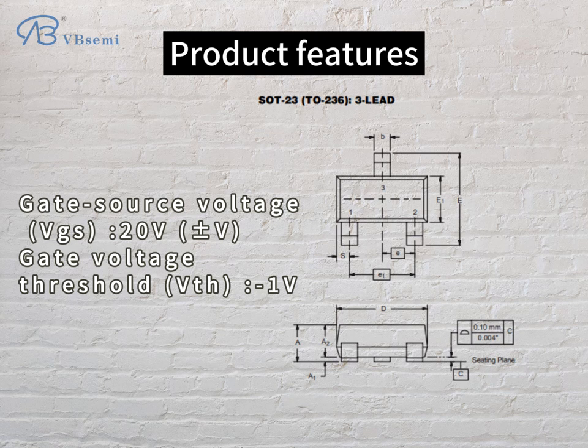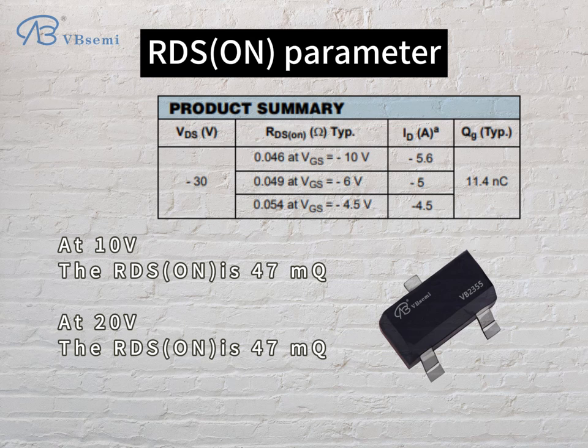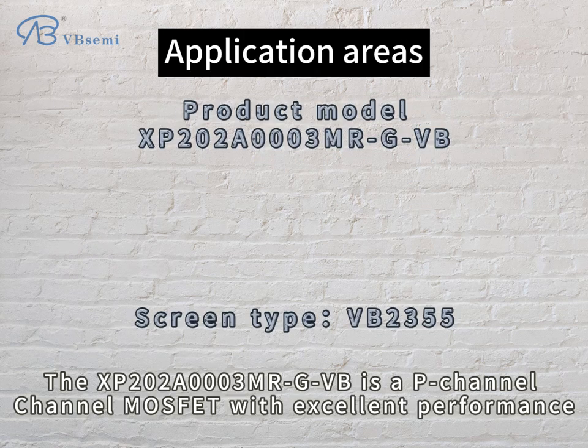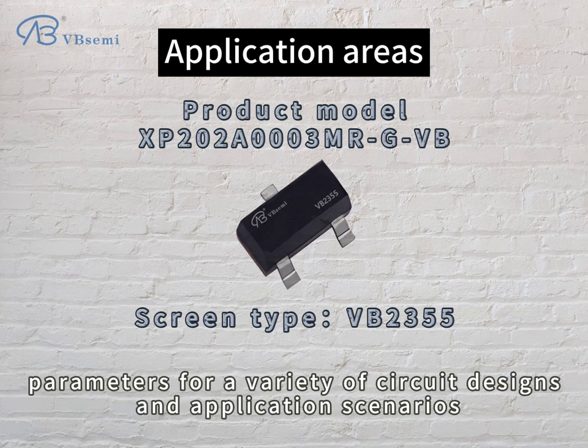Gate Voltage Threshold VTH is -1V. RDS On parameter: at VGS=10V the RDS On is 47mΩ, and at VGS=20V the RDS On is also 47mΩ.